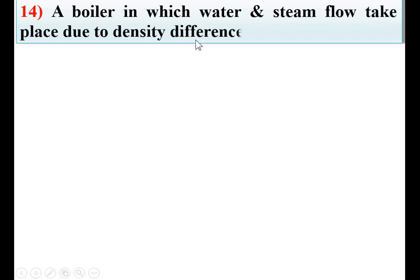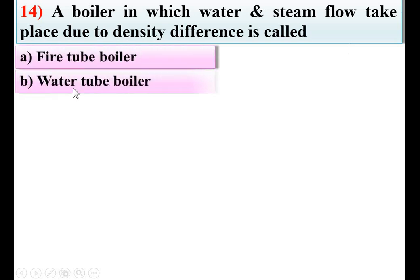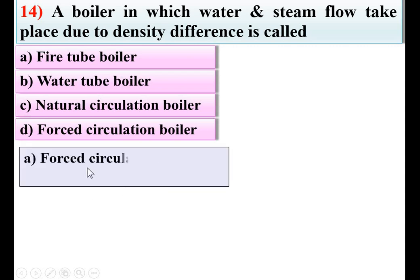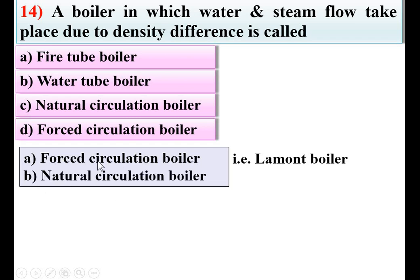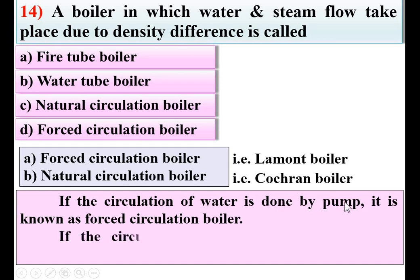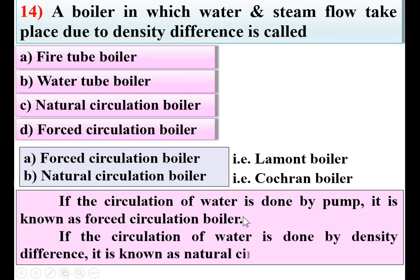A boiler in which water and steam flow takes place due to density difference is called — options: fire tube boiler, water tube boiler, natural circulation boiler, forced circulation boiler. Boilers are classified by water circulation method into two categories: forced circulation boiler — where circulation is done by pump using external force — and natural circulation boiler — where circulation is done by density difference. The example of a natural circulation boiler is the Cochran boiler. So C — natural circulation boiler — is the right answer.